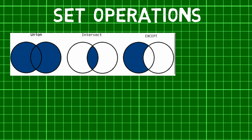Third and last is the EXCEPT operator. The EXCEPT operator takes the distinct rows of one query and returns the rows that do not appear in a second result set.